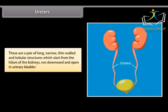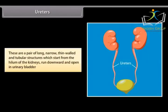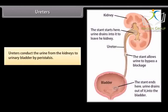Ureters are a pair of long, narrow, thin-walled tubular structures which start from the hilum of the kidneys, run downward, and open into the urinary bladder. Ureters conduct the urine from the kidneys to the urinary bladder by peristalsis.